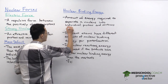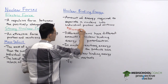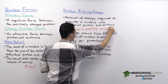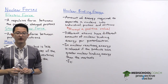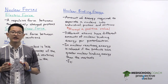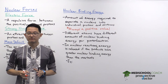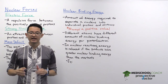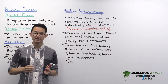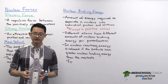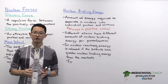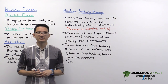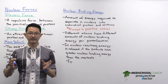The nuclear binding energy is always a positive value because separating a nucleus is always an endothermic process. Different atoms have different amounts of nuclear binding energy per nucleon, meaning some nuclei are held together more tightly than others. This is important because in nuclear reactions, if your products have more nuclear binding energy than your reactants, you are able to release energy.